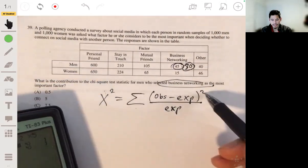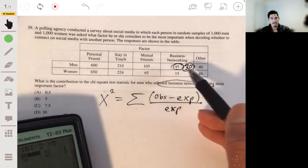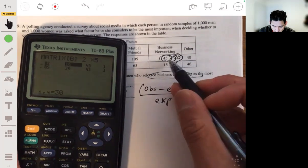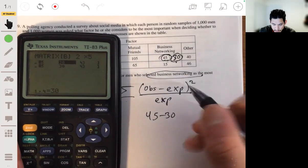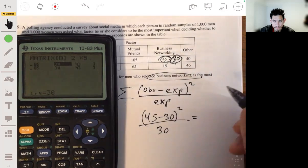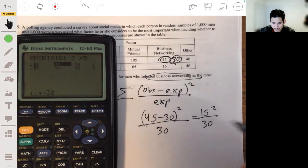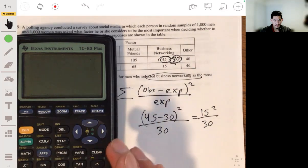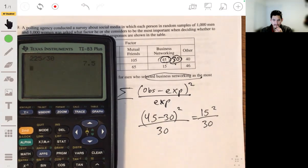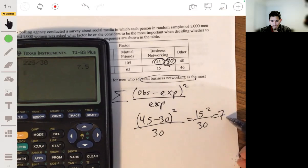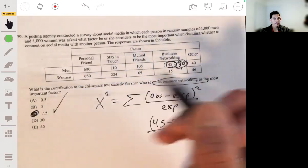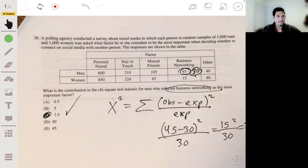So I just want to calculate this value for this observed and expected counts. I'm going to do 45 minus 30 squared over 30. 15 squared over 30, 225 over 30. You get 7.5. So the answer is simply C. All right, final one. Here we go.